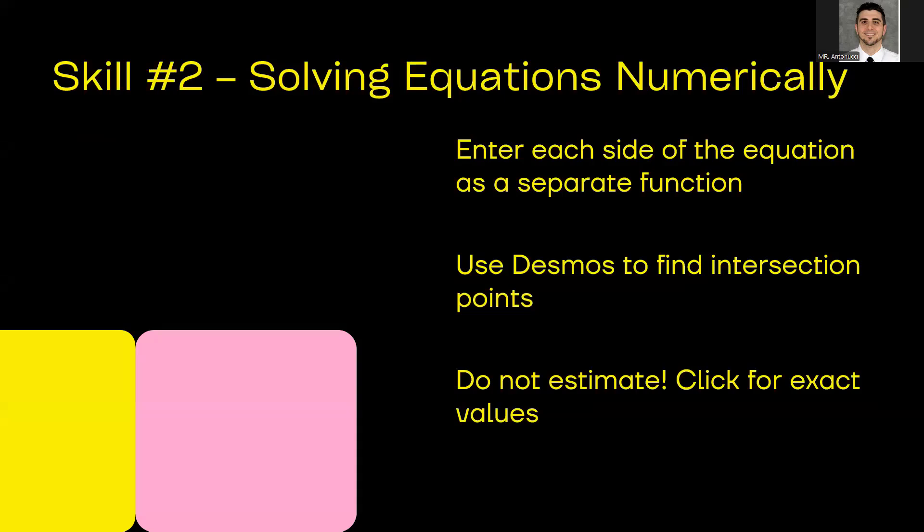So the next thing we can do in Desmos is solving equations numerically. Now let's talk about solving these equations. So on the AP exam, you might need to solve an equation where you have to find the intersection point of two functions. The easiest way to do this in Desmos, well, graph both sides of the equation and find their intersection points. You just enter both functions as separate equations and look for where the graphs intersect. But don't just use guesswork with the cursor. You need to find the actual intersection point. So similar to finding the point that we did in the previous problem, you just click on the point. So we're going to run through an actual example here.